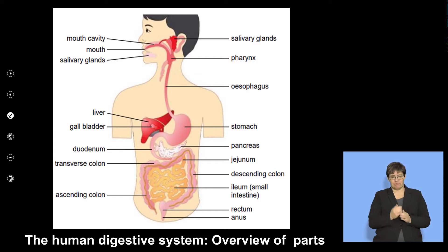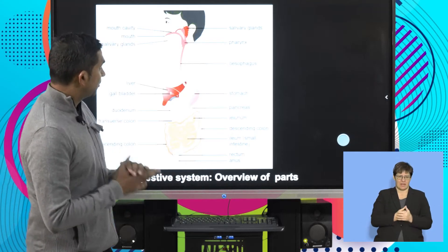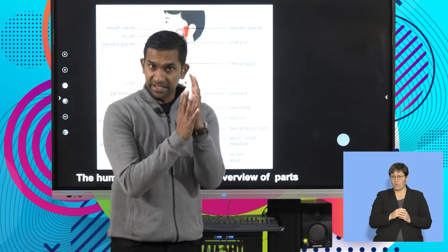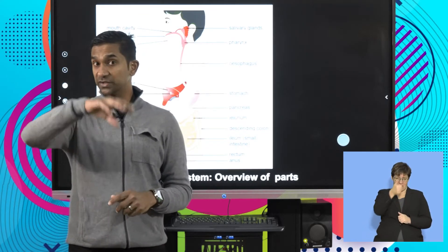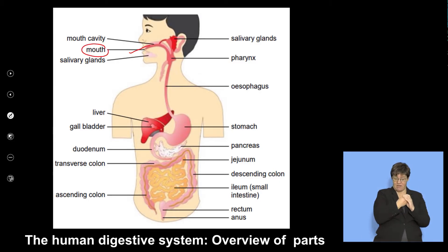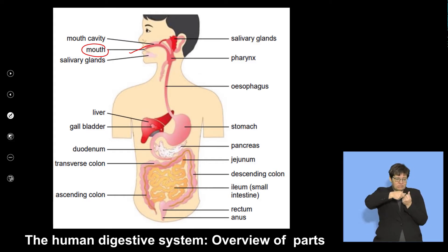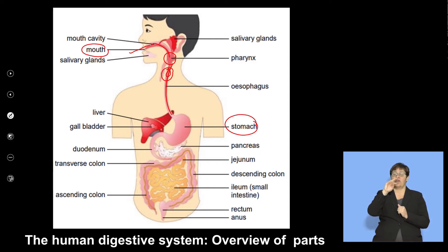Before getting into complex processes, let's have an overview of the parts and their locations. There is an alimentary canal as the main part of the digestive system, but there are also accessory organs associated with it. The mouth is the organ through which food is ingested — it contains teeth and salivary glands that assist in mechanical digestion. Food then moves through the pharynx, down the esophagus, into the muscular bag called the stomach.